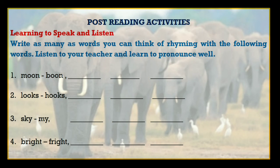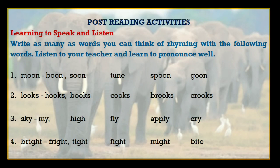First of all, listen carefully. Moon — boon. You have to make rhyming words. Next: looks — hooks. Next: sky — my. Next: bright — fright. Students, take your time and write the rhyming words. Yes, these are the answers — match your answers.